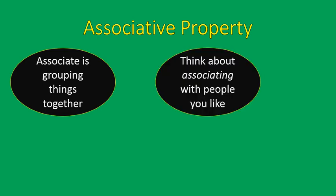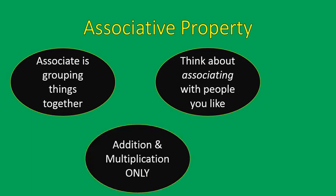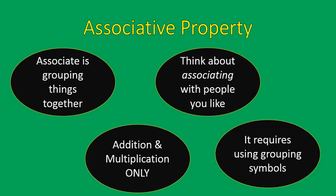Let's look at our next property: the associative property. The associative property is about grouping things together. Think about the people you associate with — that's like the associative property. When you're grouped together, you're associated together. Again, it's only addition and multiplication, and it requires grouping symbols. This is the biggest giveaway. If it's an addition problem with grouping symbols, you know it's the associative property. If it's an addition question where the pieces move, it's the commutative property. Associative property will use grouping symbols.